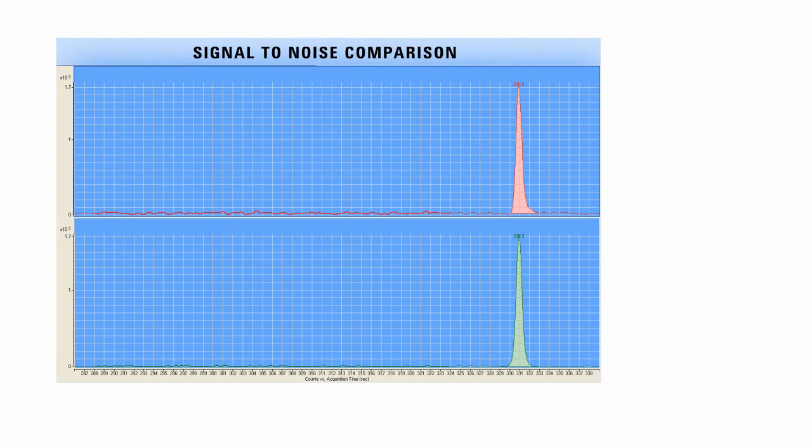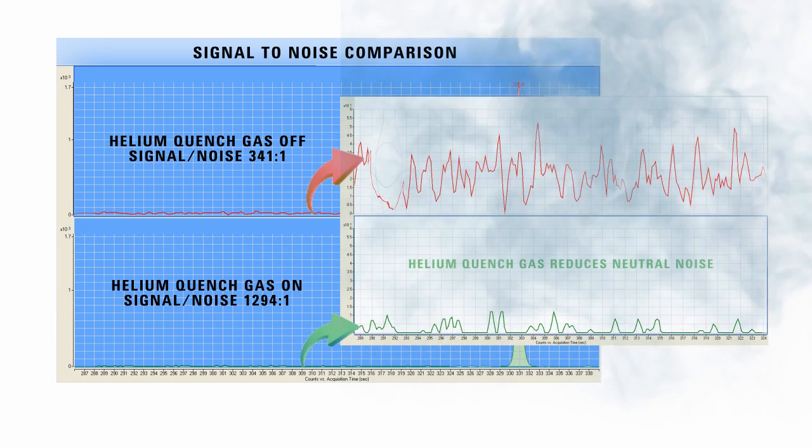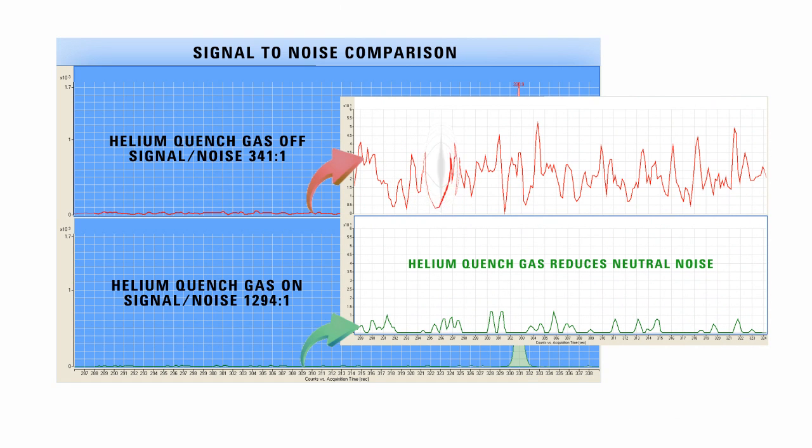A comparison of signal-to-noise ratio with and without helium quenching shows the benefit of this technology. Helium quenching has no effect on product ion signal, but the neutral noise component is reduced by a factor of four. This technical breakthrough means lower limits of detection and quantitation.